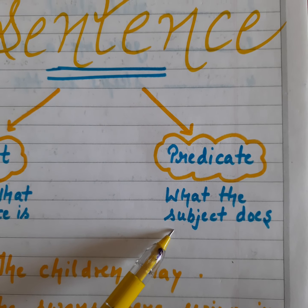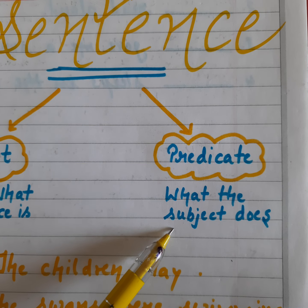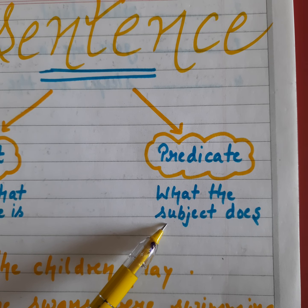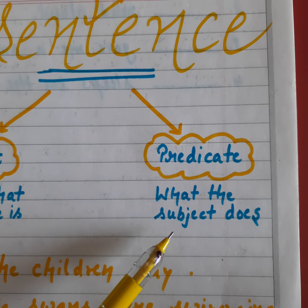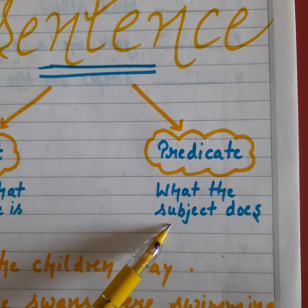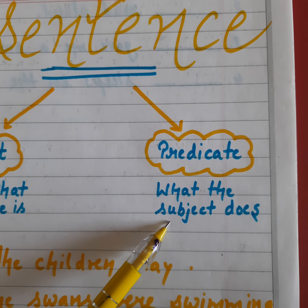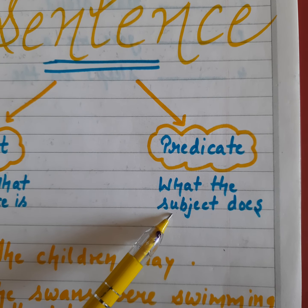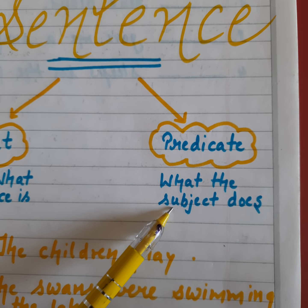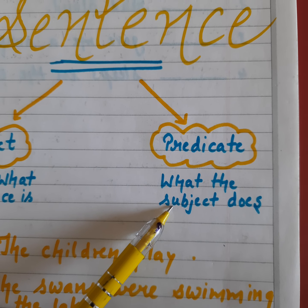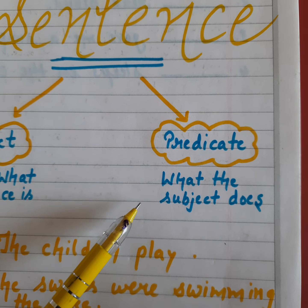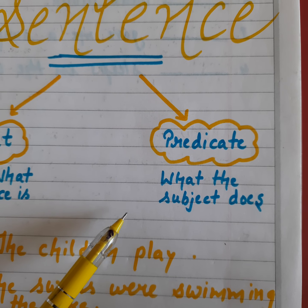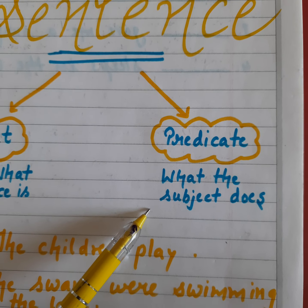Now what is predicate? The part of a sentence that tells us what the subject is doing is called predicate. Suppose the subject is a boy — the part which tells us what the boy is doing is called predicate.